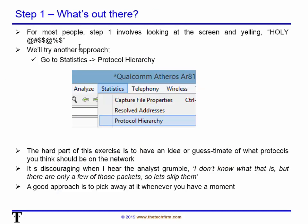For most people, step one involves looking at the screen and yelling. There's a better approach: go to Statistics > Protocol Hierarchy, and you can actually see all the protocols flying around. The hard part is having a gut feel for what protocols should be on your network — not what is, but what should. It's discouraging when an analyst says 'I don't know what that is, but there's only a few of them, so forget it.' I say the opposite: it only takes one packet to cause a problem. If you're not sure what it is, that's what you should investigate.